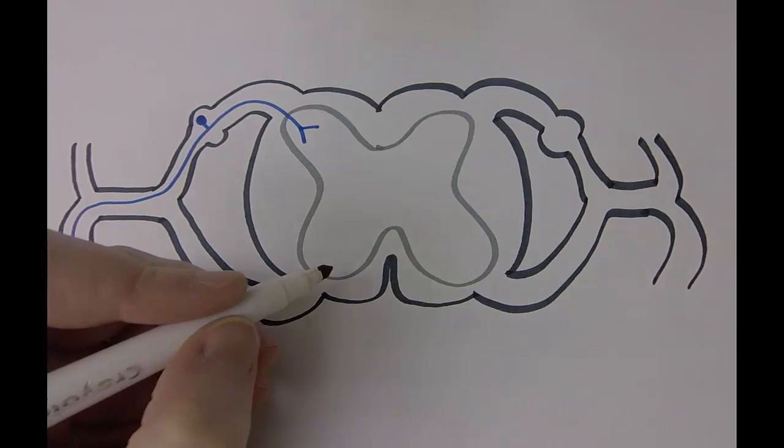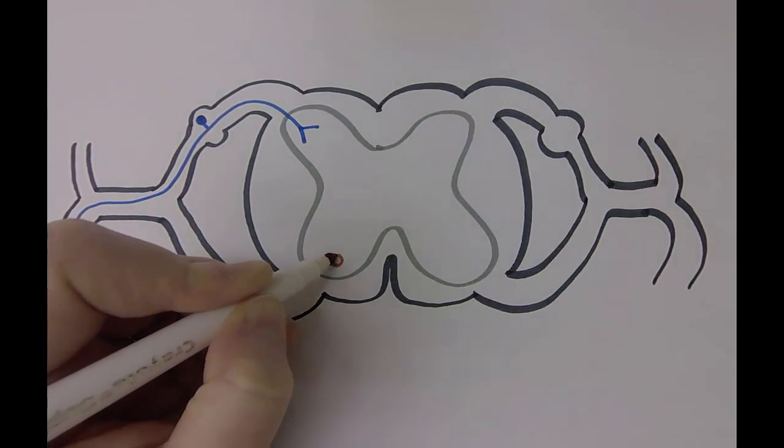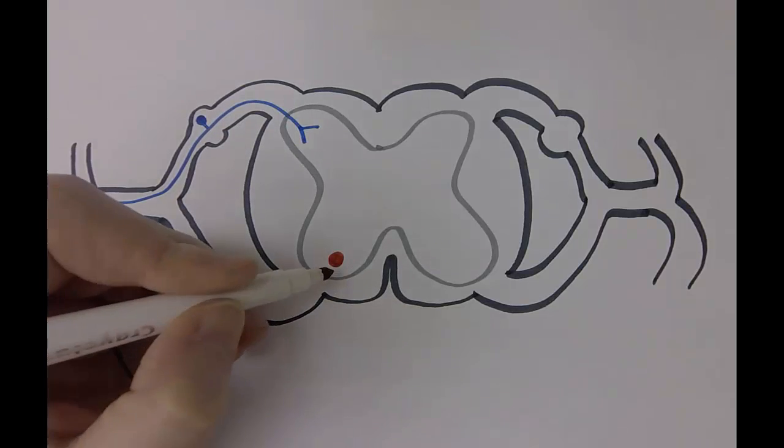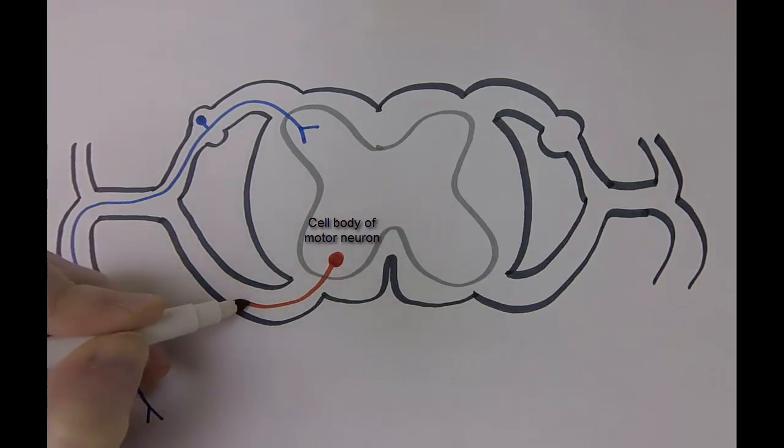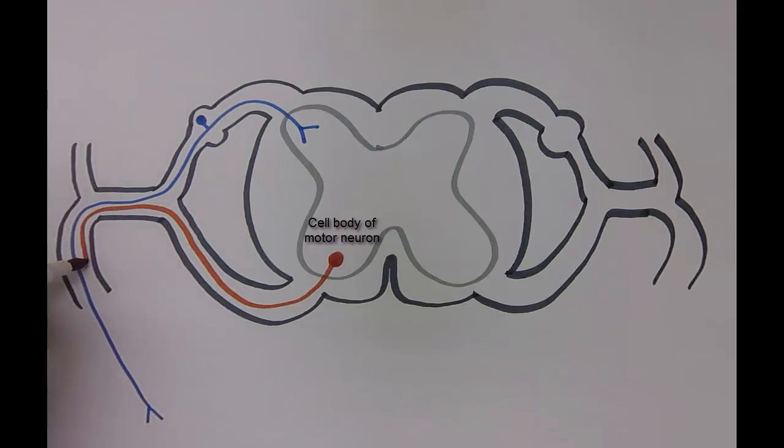Now, if we have a muscle on the anterior surface of the body or in one of the limbs that we'd like to send information to, instructions to contract, the cell body of this neuron lies in the ventral horn of the spinal cord. The neuron will exit through the ventral root along the spinal nerve and travel along the ventral primary ramus.